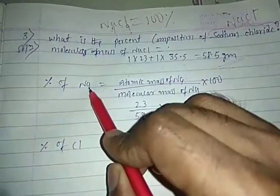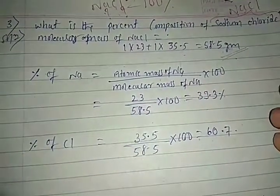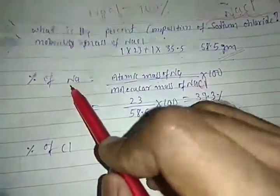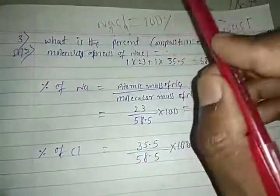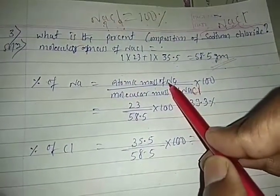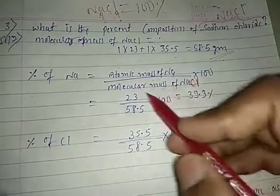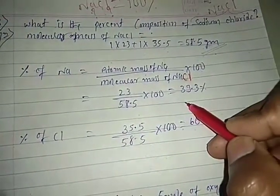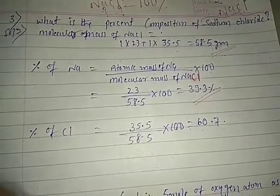The formula for percentage of an element is: (atomic mass of element / molecular mass of compound) × 100. Percentage of sodium = (23 / 58.5) × 100 = 39.3%. We consider the NaCl compound as 100%, and sodium contributes 39.3% of that.